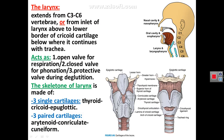Starting with the larynx: it extends from the level of C3 vertebra to the level of C6 vertebra, or from the inlet of the larynx behind the epiglottis down to the lower border of the cricoid cartilage, below which is the trachea. The larynx serves as an open valve for respiration, a closed valve for phonation, and a protective valve during deglutition.